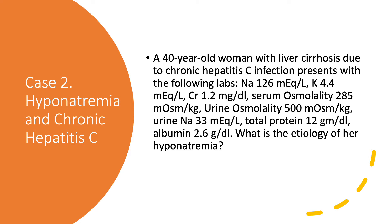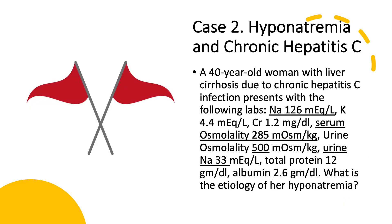Let's look closer at these labs. Sodium is 126. Urine osmolality is high. Urine sodium is pretty high — is this SIADH? Well, no. Look at serum osmolality — it is normal. Normal serum osmolality is 280 to 295. With SIADH, you have hypoosmolar hyponatremia, so this is not the case. This is the first red flag. The second one is total protein — it's 12, very elevated — and albumin is low.